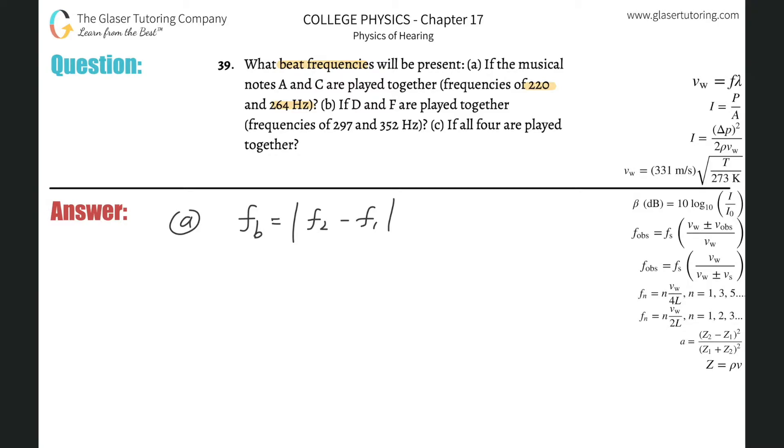It doesn't matter 1 minus 2 or 2 minus 1, it's all absolute value. So the beat frequency for the first two is simply 264 minus 220. When we do that math out, the beat frequency should equal 44 Hz.